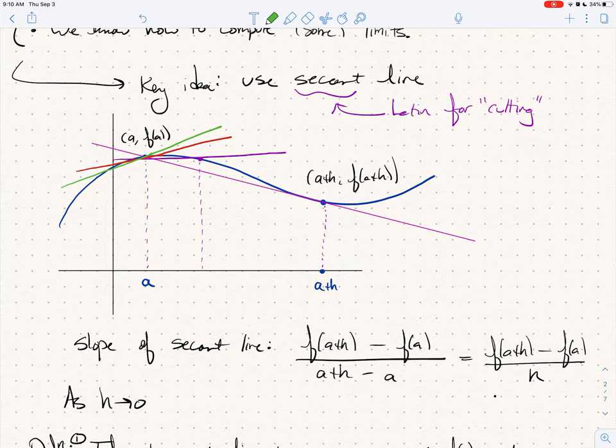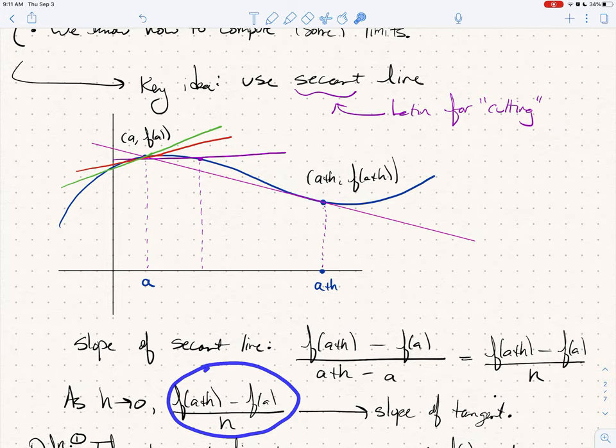And so as h goes to zero, let's finish this statement. As h goes to zero, f of a plus h minus f of a all over h, this is going to the slope of the tangent line. And so this expression is sometimes called the difference quotient. And you may have seen that in your algebra days. Sometimes in college algebra, you're asked to compute these things, even though there's no context given. So everybody wonders, like, why? Well, why is because it has to do with calculus. So let's stop this video here, and we'll make things more formal in the next video.